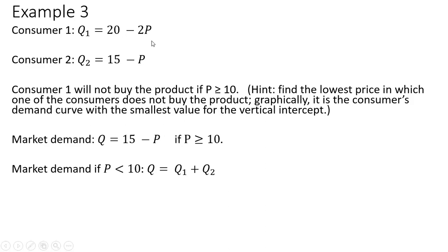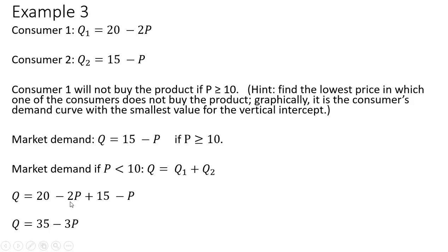Now if the price is less than $10, both consumers will be buying the product. For example, if the price is $9, consumer one will buy two units — 20 minus 2 times 9 equals 2 — and consumer two will buy six units at a price of $9. So when the price is less than $10, we add up both demand equations. Doing that: 20 plus 15 is 35, and minus 2p plus minus p is minus 3p. So the market demand has two parts depending on whether the price is above or below a certain level.